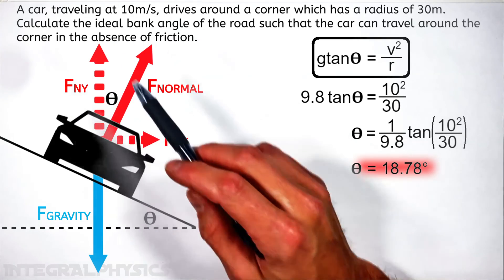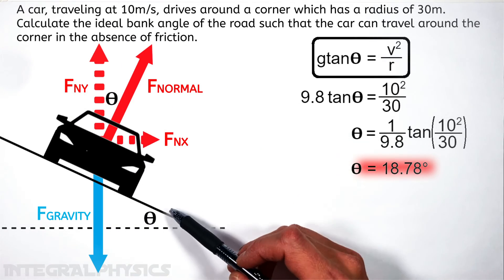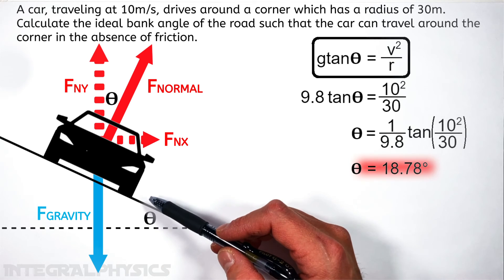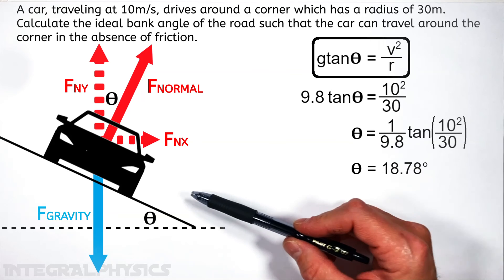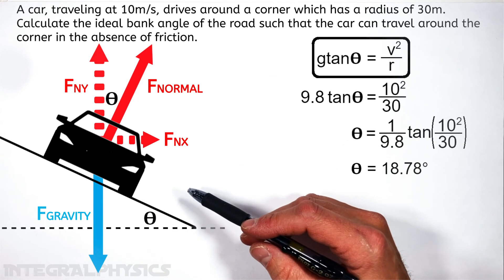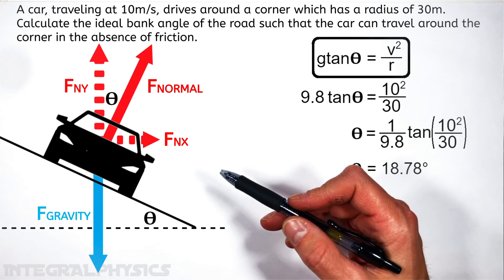Meaning if this car drives at just this speed around this corner, that's been banked at just the right angle, there's not going to need to be any friction between the tires and the road. Now if the car goes too fast or too slow, that's going to be a different story. And we're going to save that for the next video.